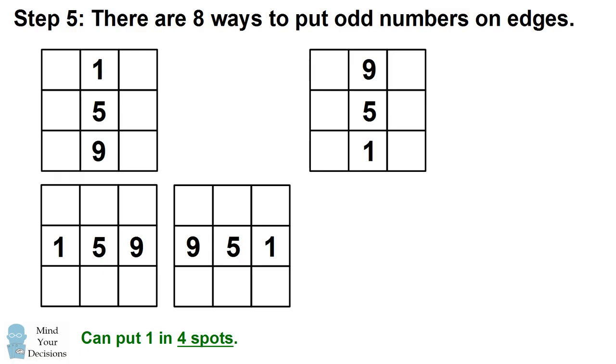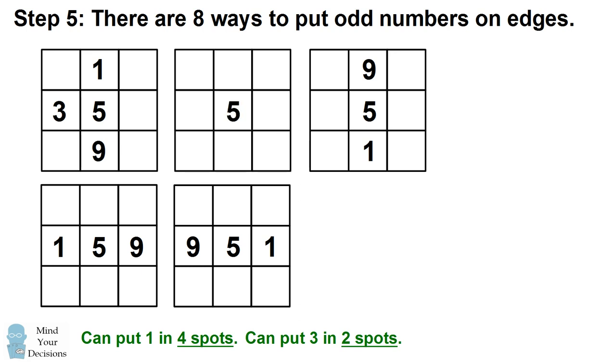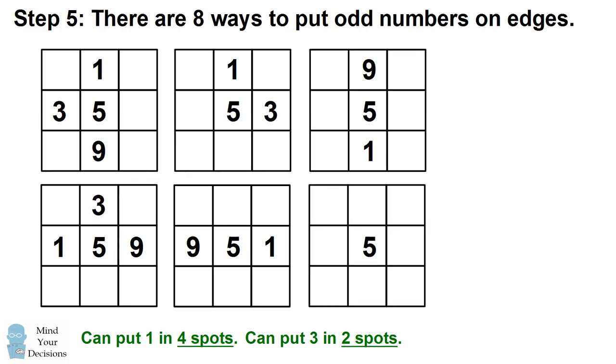Now in the perpendicular row or column, we can put the number 3 in two different spots. If you focus on the square in the upper left, we can put the 3 to the left of the 1, or we could put it to the right of the 1. If you look at the lower left square, we could put the 3 above the 1, or we could put it below the 1.